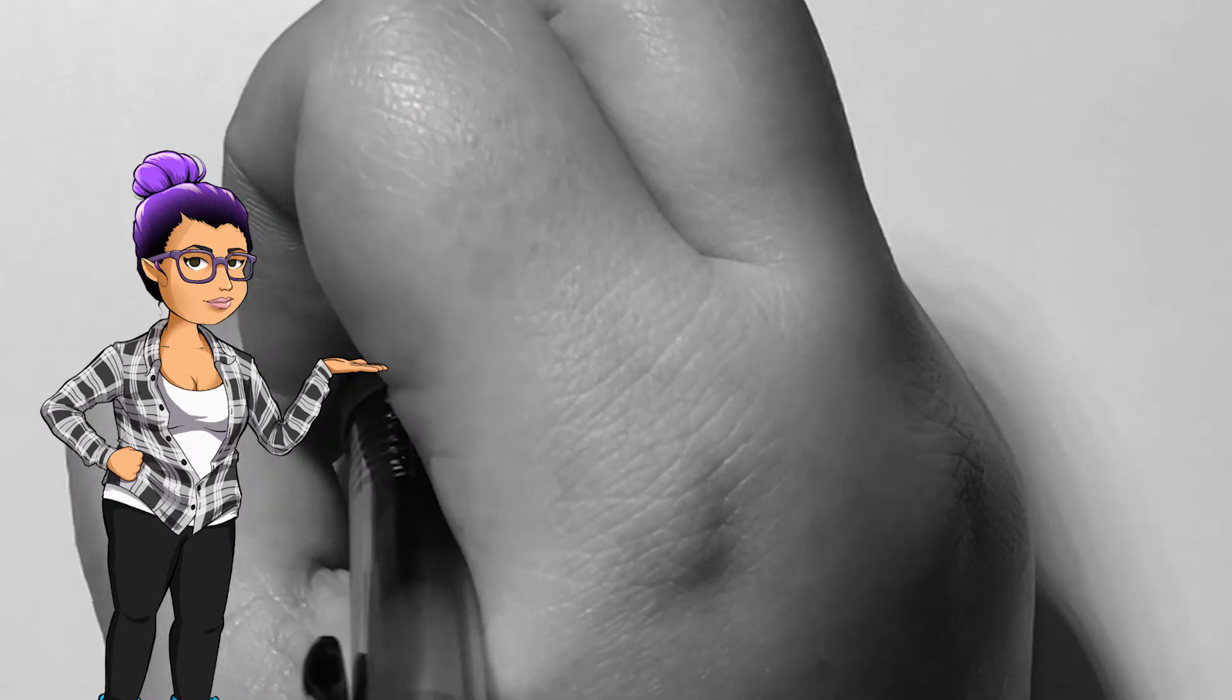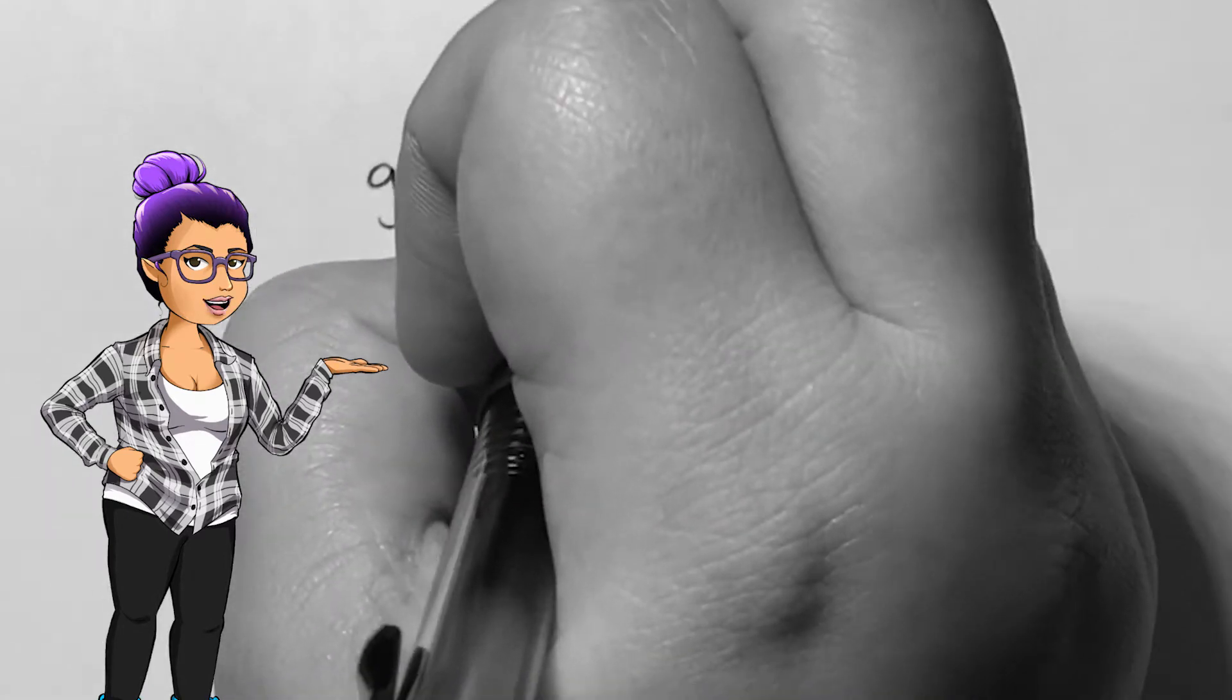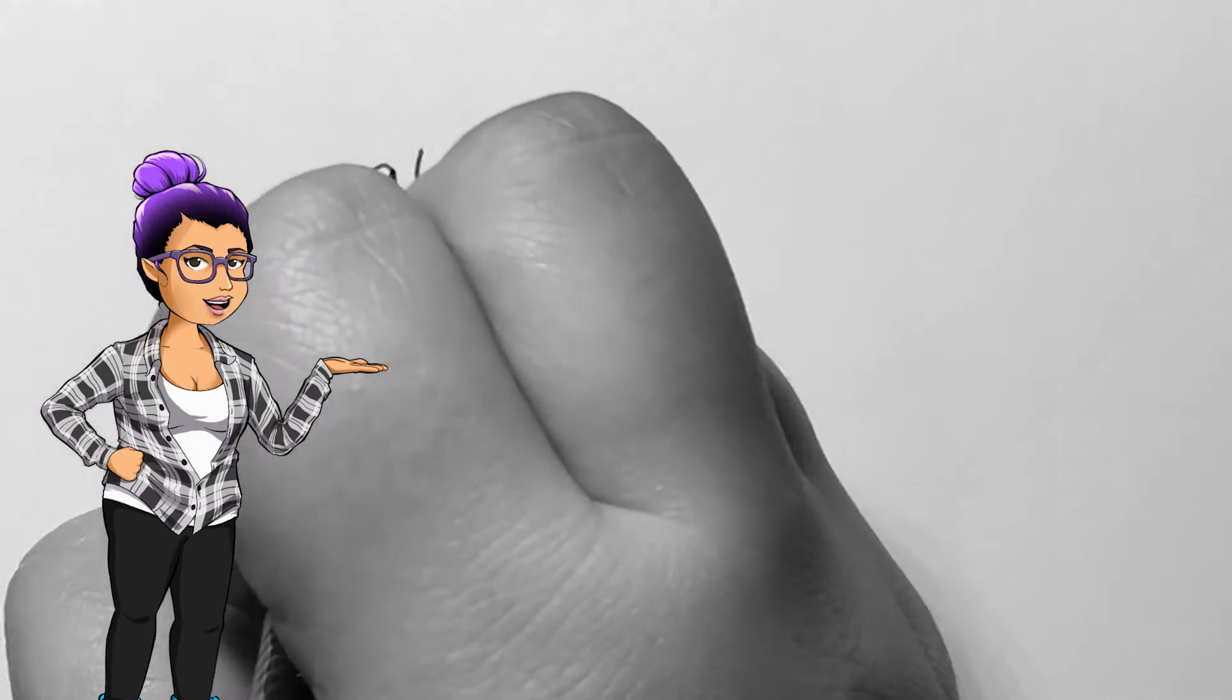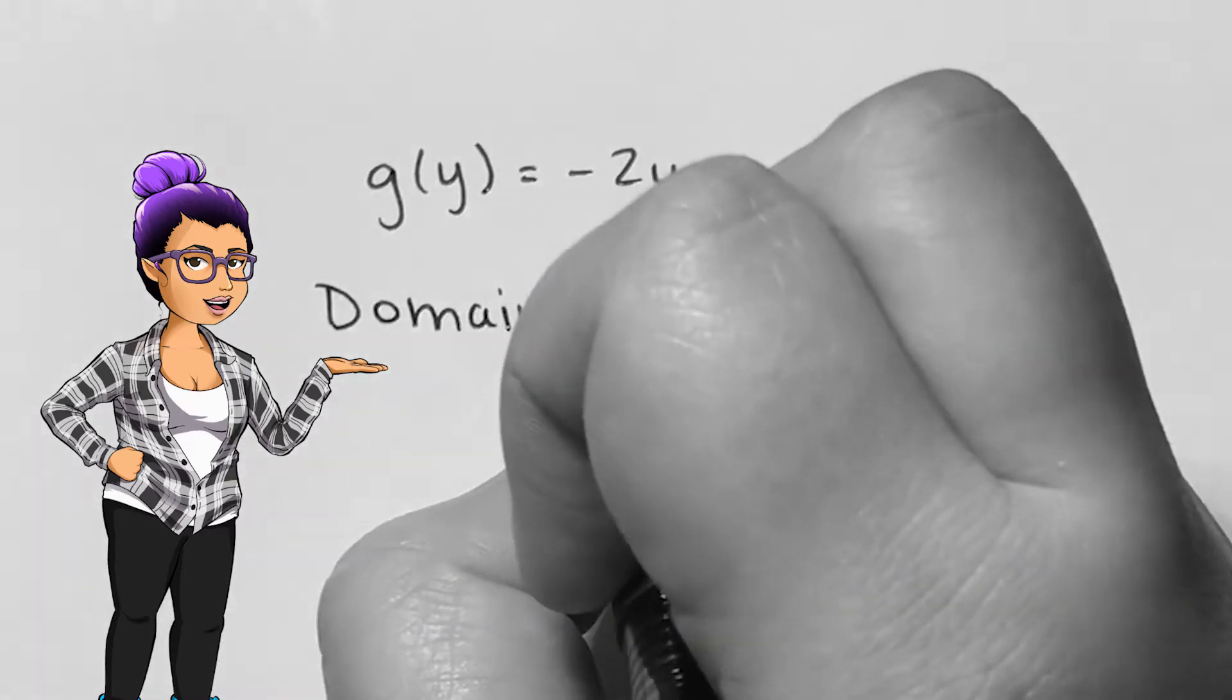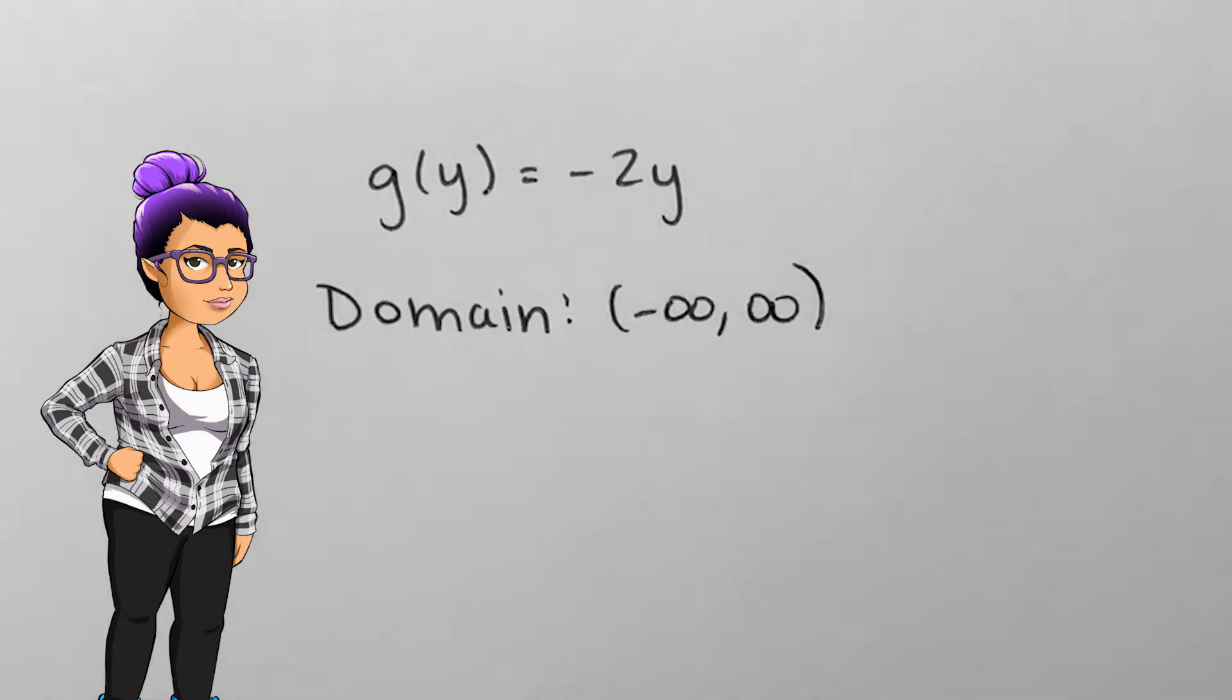In a function like g of y equals negative 2 times y, this looks like it's based on the identity function, so its domain would match negative infinity to infinity.